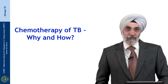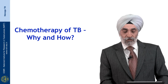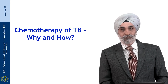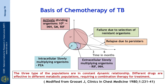Quickly taking you through the why and how of chemotherapy of TB. It has been hypothesized that in a given case of tuberculosis, there are three very important populations: a rapidly dividing or actively dividing group of organisms, an intracellular slowly multiplying group of organisms, and an extracellular slowly multiplying persistent group of organisms which have just spurts of growth in between.